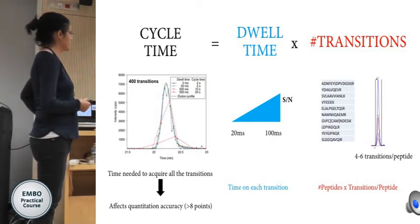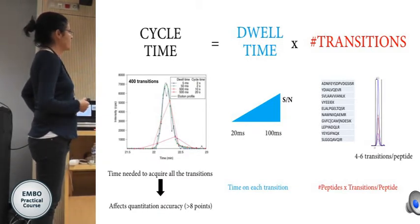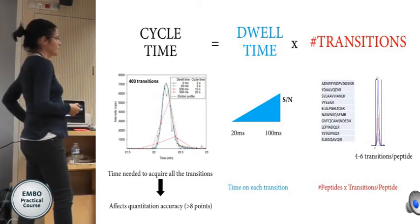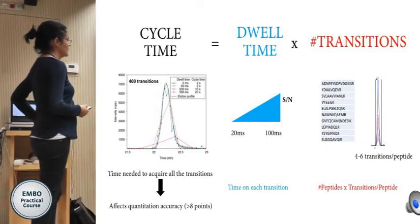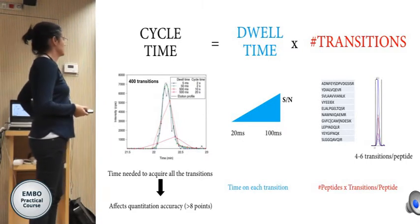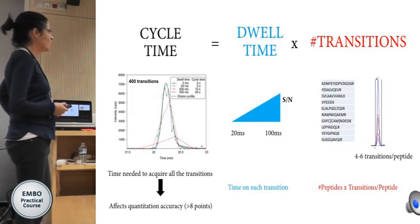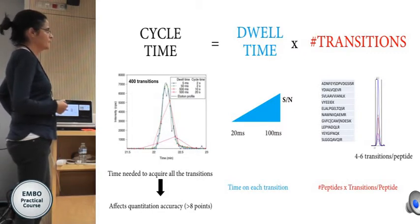Here is another example showing how different data sampling frequencies change the area under the curve of a peak. The cycle time is the dwell time multiplied by the number of transitions being monitored, which depends on the number of peptides and the number of transitions per peptide — usually we choose between four and five. We saw yesterday at the instrument that this is not completely true because there is extra time needed to switch between transitions, so the actual cycle time is always longer than this estimate.